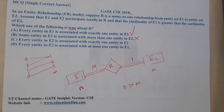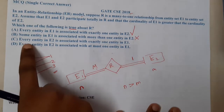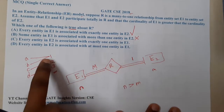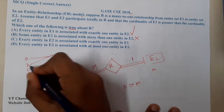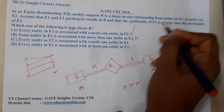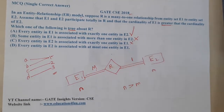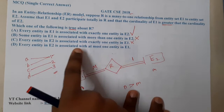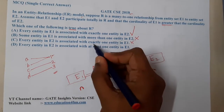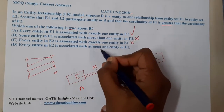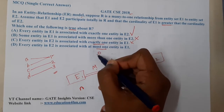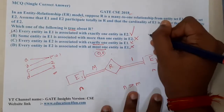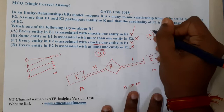Option C says every entity in E2 is associated with exactly one entity in E1. This is wrong because in our example, entity 1 in E2 is mapped to two entities from E1. Option D says every entity in E2 is associated with at most one entity, meaning zero or one — but we can see two relations to entity 1, so this is also wrong. Therefore, the correct answer is option A.